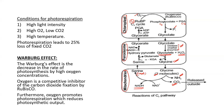Serine then comes back to the peroxysome, where it converts alpha-ketoglutaric acid to glutamic acid and produces hydroxypyruvate. Hydroxypyruvate, after accepting reducing hydrogen from NADH, changes into glycerate. Glycerate is given to the chloroplast, where it is converted to PGA to re-enter the C3 cycle.